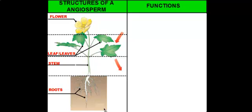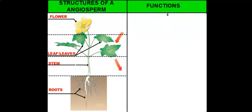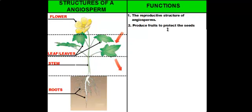We'll start off with the flower first. The flower's main job is to be the reproductive structure of the angiosperm. So when seeds are made, it's in the flower. And as a result, when the flower gets fertilized, the flower will then turn into a fruit, and inside the fruit we have seeds. We'll talk more about flower reproduction and fruit development in the next vodcast.